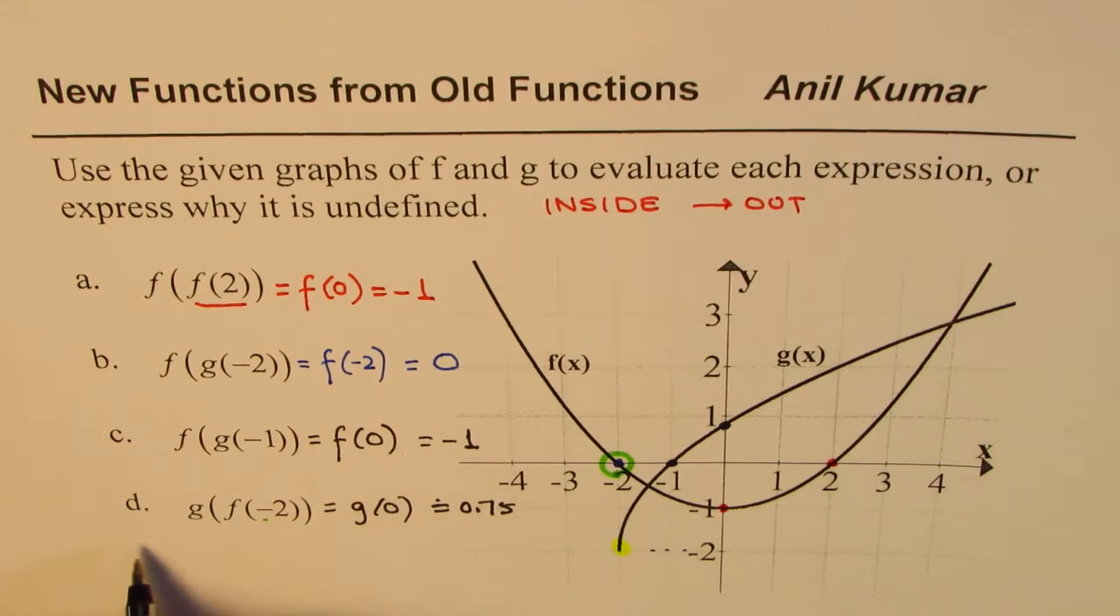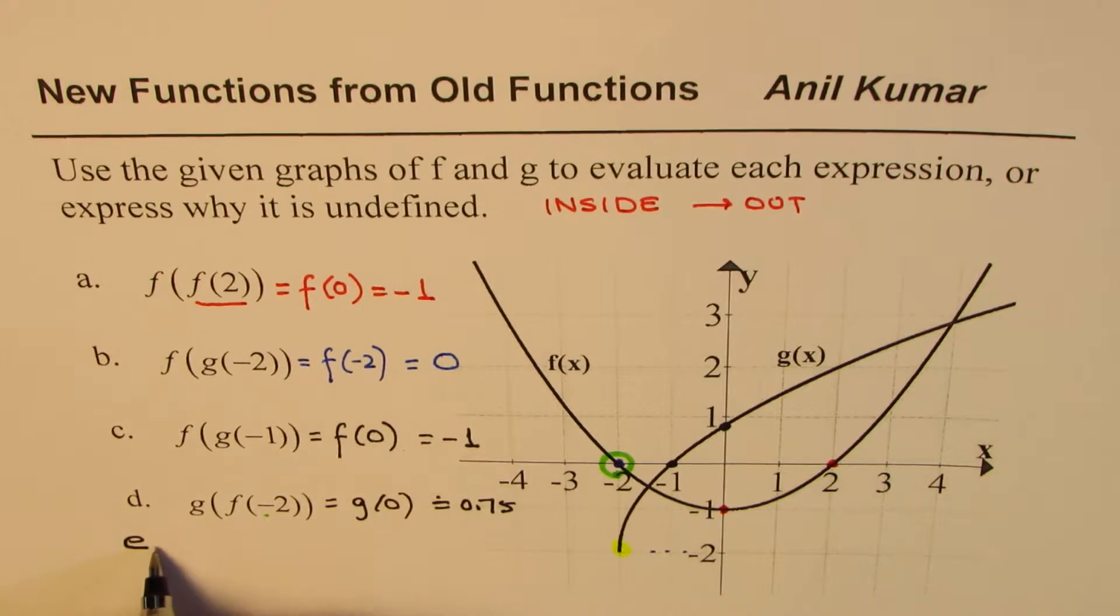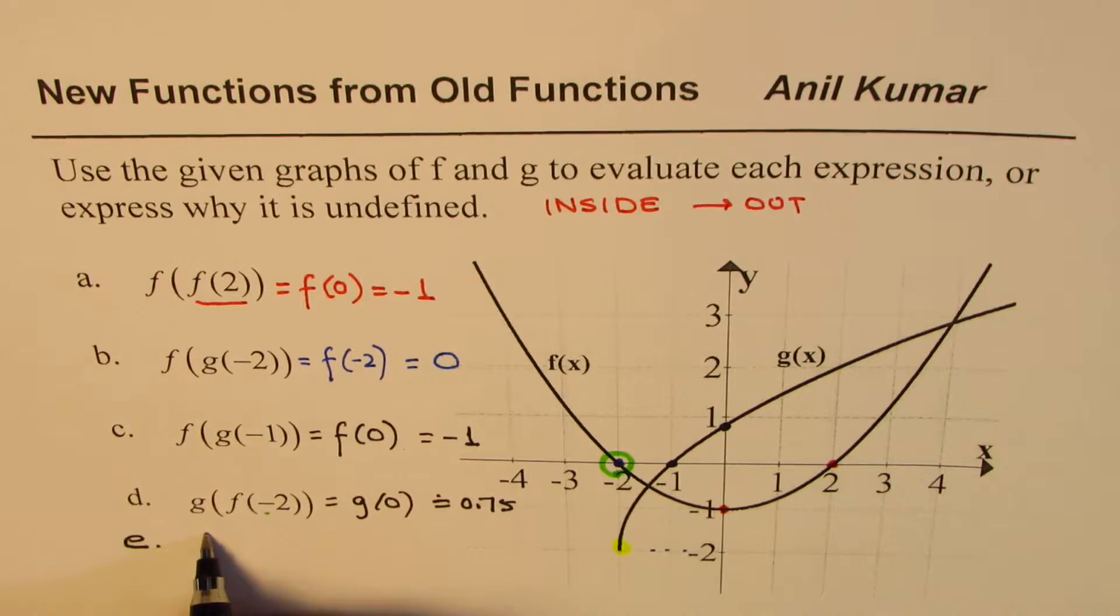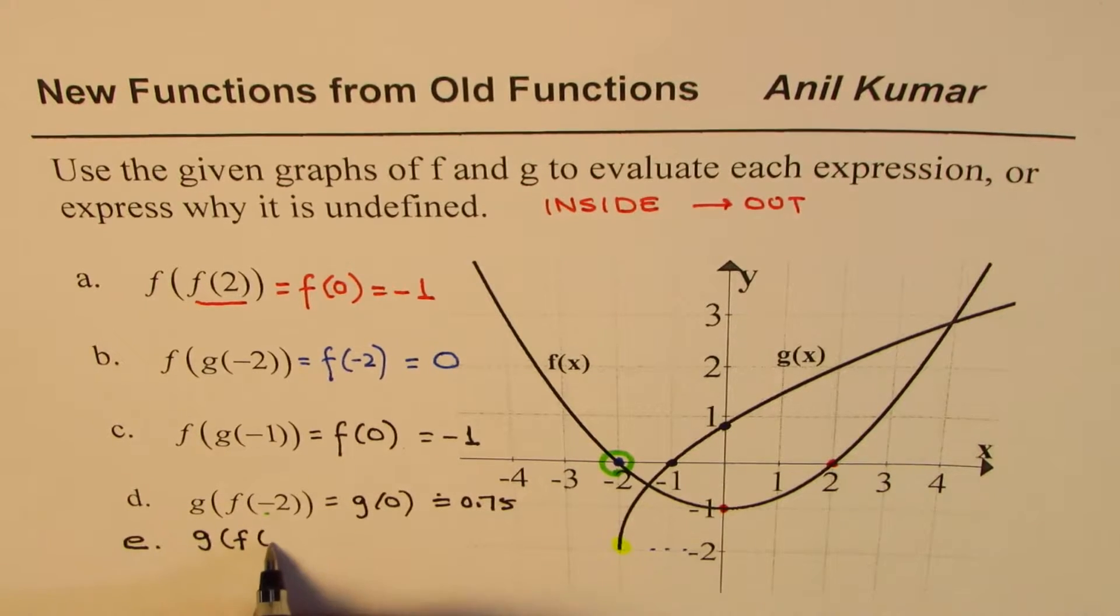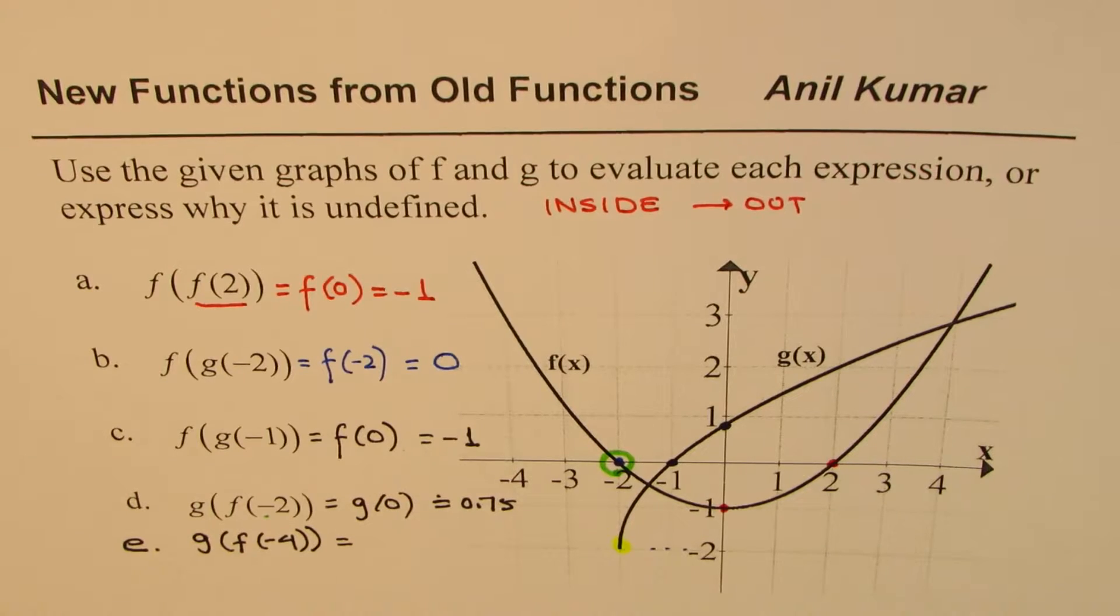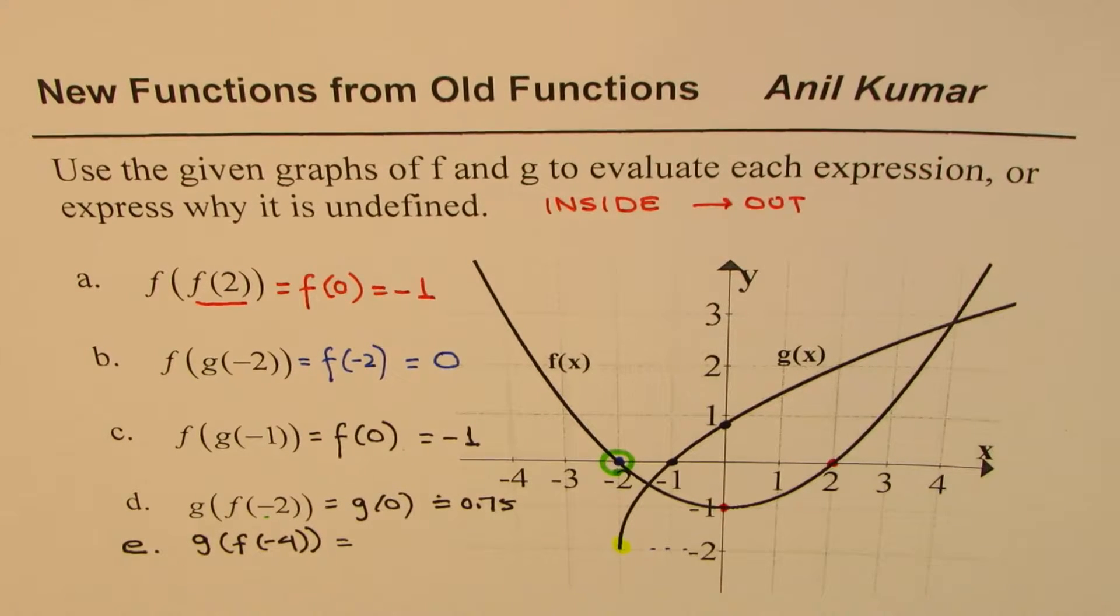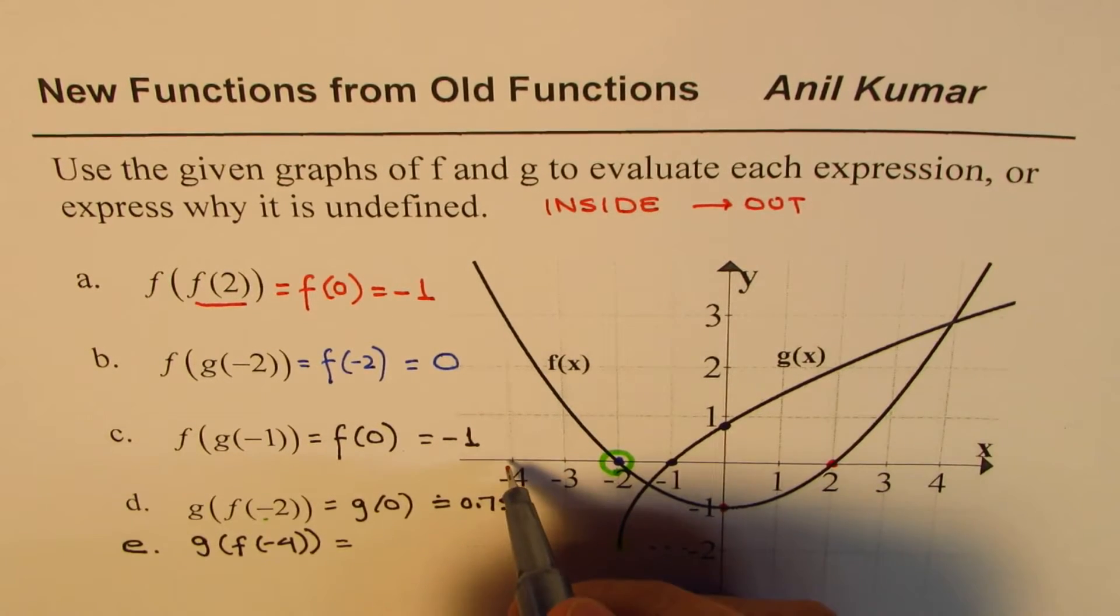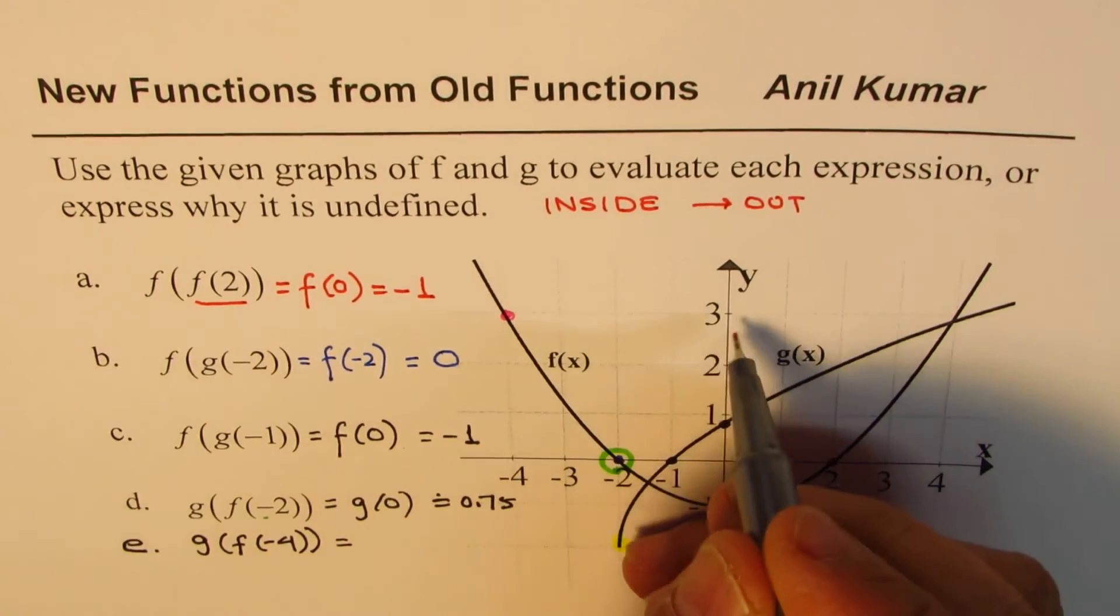Now let me give you another question here. This time we will try to find what is g(f(-4)). Can you do this one? What is g(f(-4))? So that's the question for you. Well let's look into it. Let's first find the inside function which is f(-4). So at -4 I get this value which is 3.